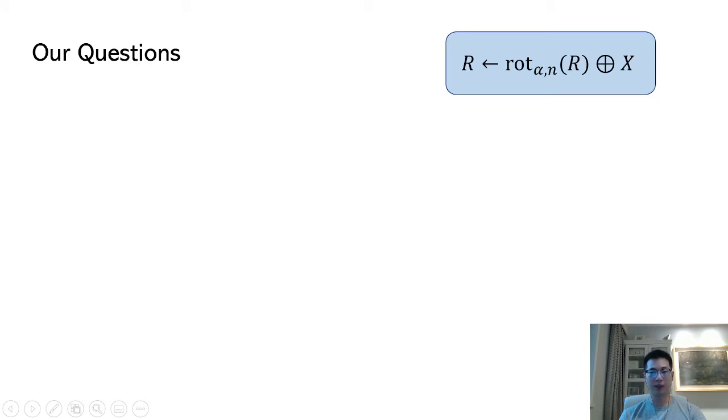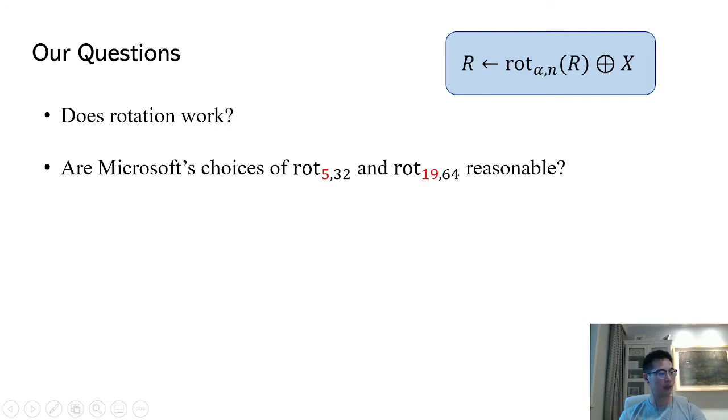The first question is, can rotation indeed accumulate entropy? In other words, given the above rotate then XOR procedure, after receiving 32 or 64 samples, we really want to know whether the register R will converge to a high entropy state.